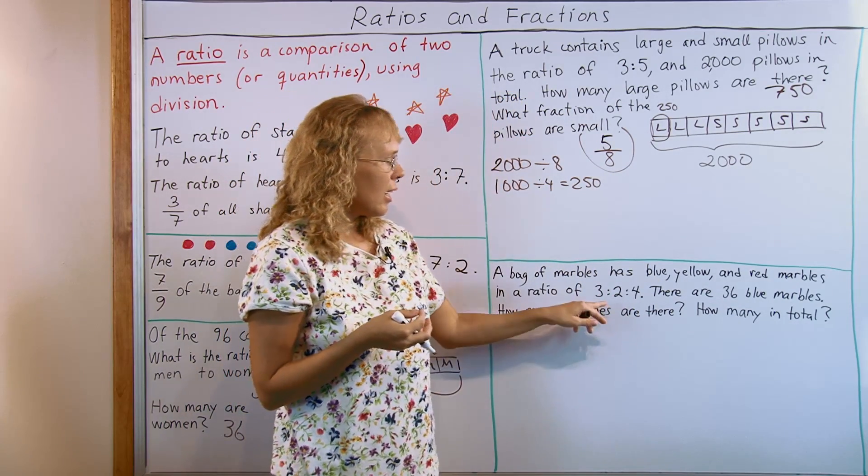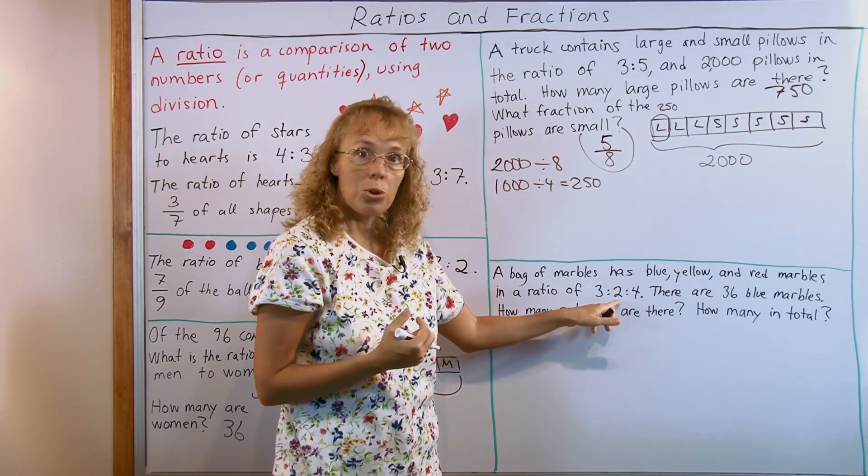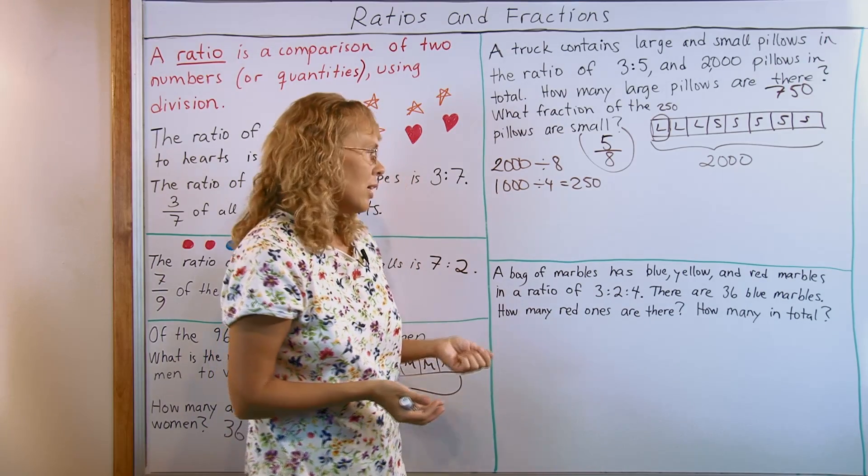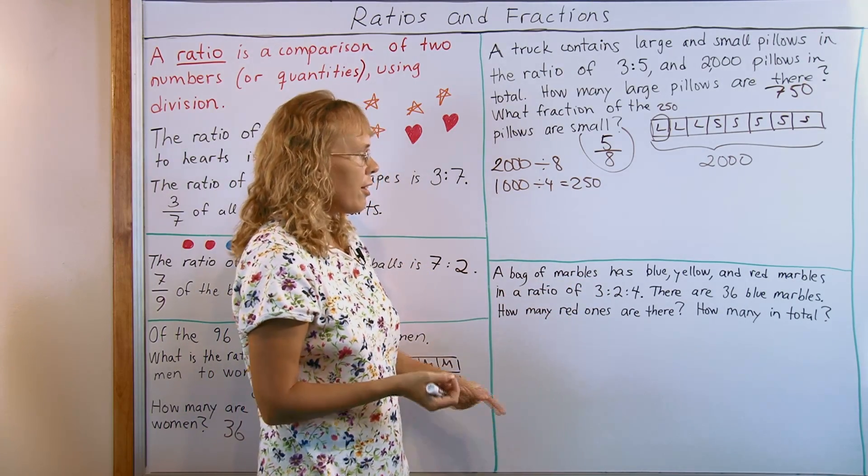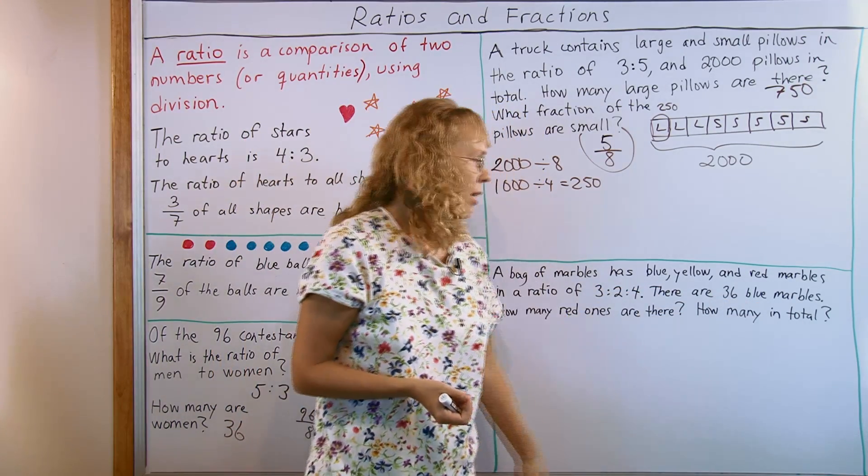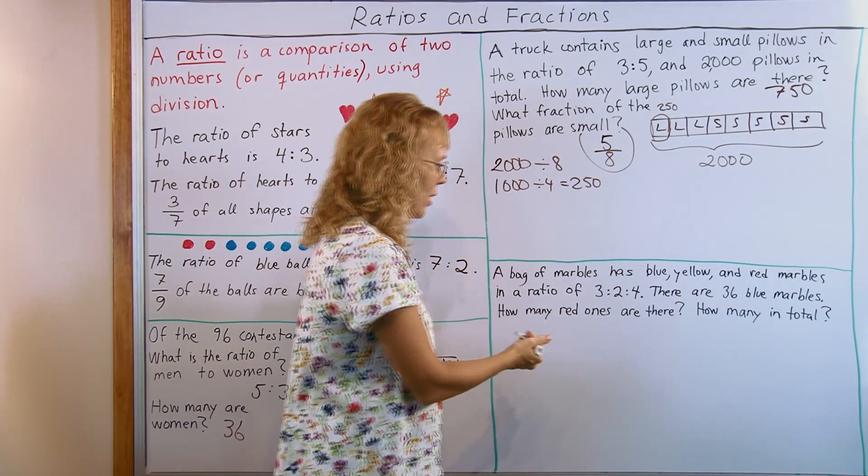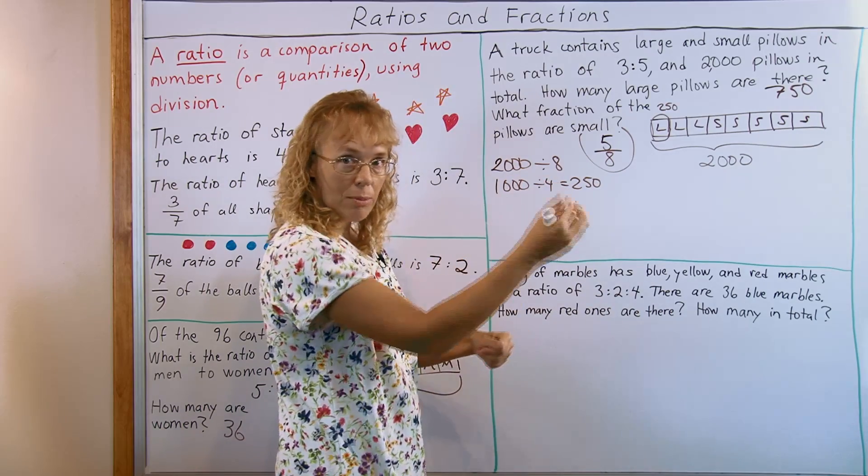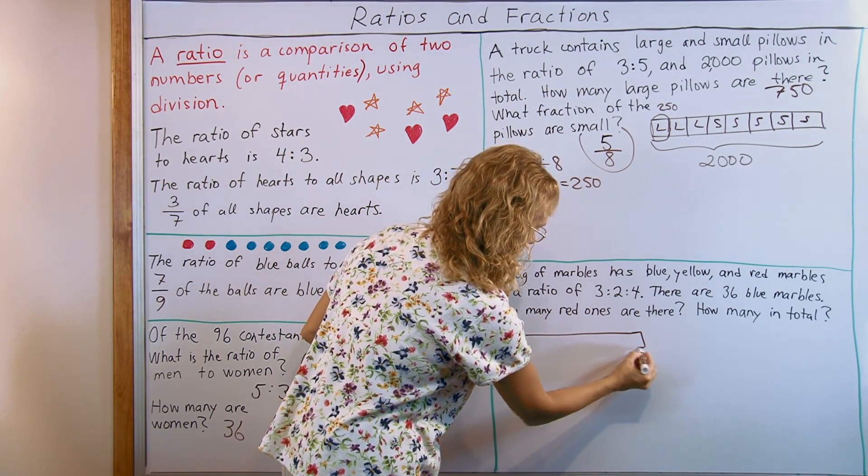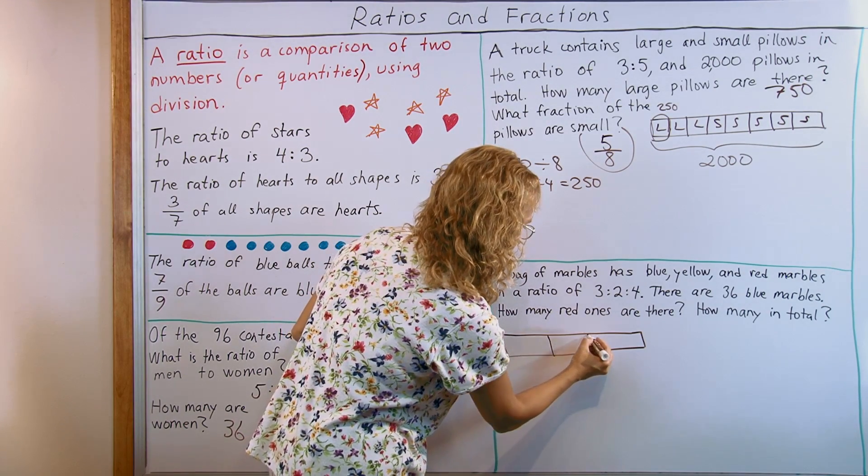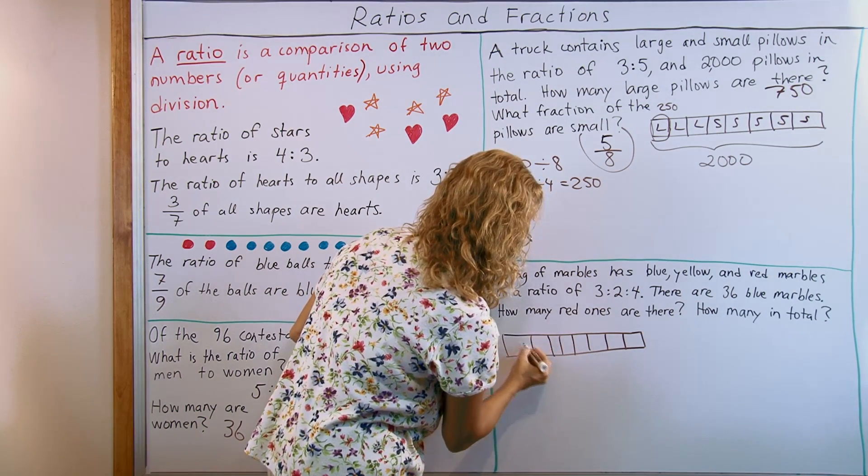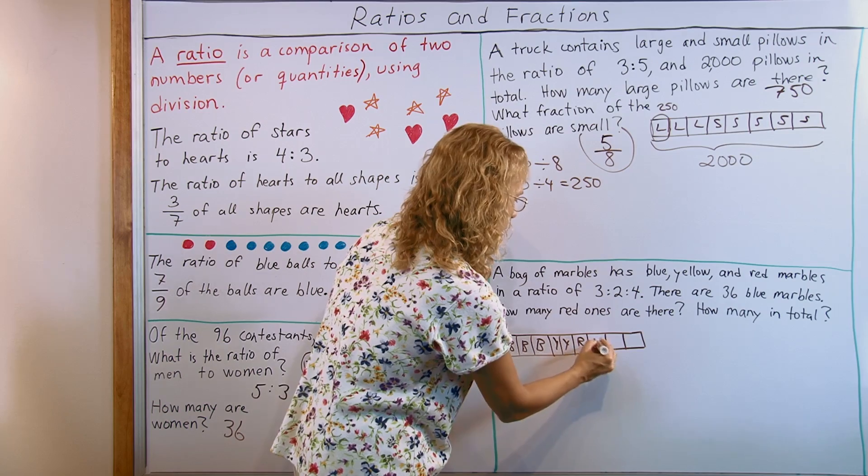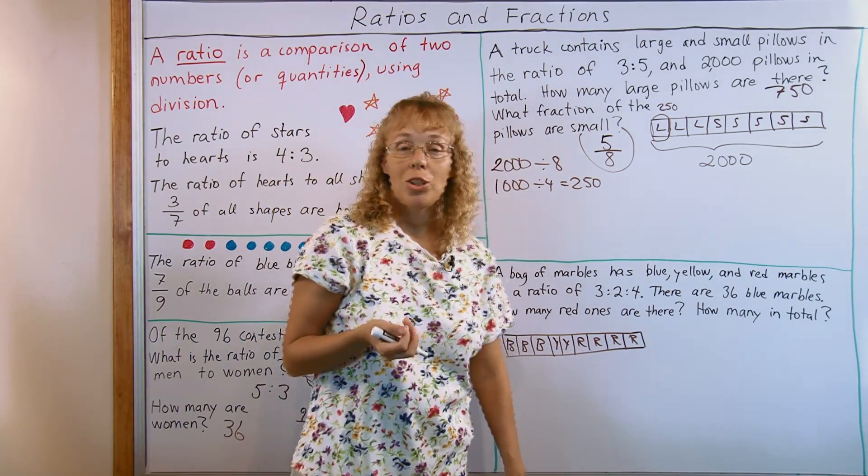My last example has this kind of ratio which is 3 terms, 3 to 2 to 4. And that's perfectly fine. A ratio can have 3 or more terms. A bag of marbles has blue, yellow and red marbles, and they are in a ratio of 3 to 2 to 4. There are 36 blue marbles. How many red ones are there, and how many in total? I'll again draw my diagram. I need to draw 3 blocks for blue, 2 blocks for yellow and then 4 blocks for red. So that means 9 blocks in my diagram in total. Let's divide it into 3 parts first, then those two. 3 parts are blue, then yellow and the rest red. This time we are not told the total number of marbles, it's asking that.